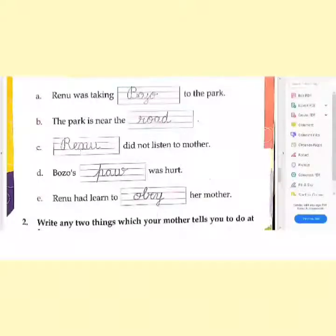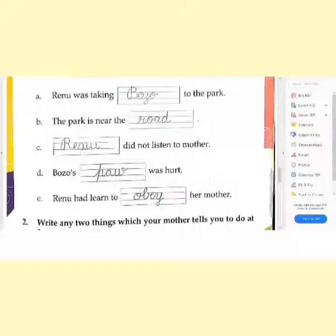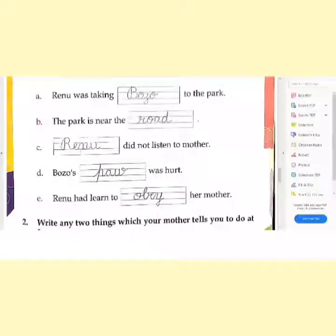Next, 'Bozo's Dash was hurt.' Bozo's Pau was hurt. Next, 'Renu had learned to Dash her mother.' Renu had learned to obey her mother.